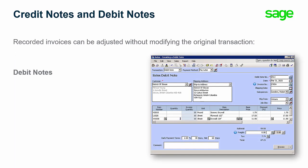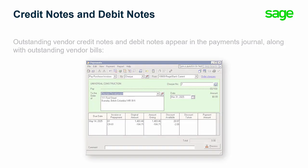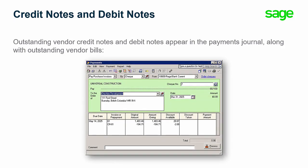If the quantity or the amount invoiced needs to be increased, then a debit note can be recorded to make the adjustment. Outstanding customer credit notes and debit notes appear in the receipts journal, along with outstanding customer invoices. Outstanding vendor credit notes and debit notes appear in the payments journal, along with outstanding vendor bills.